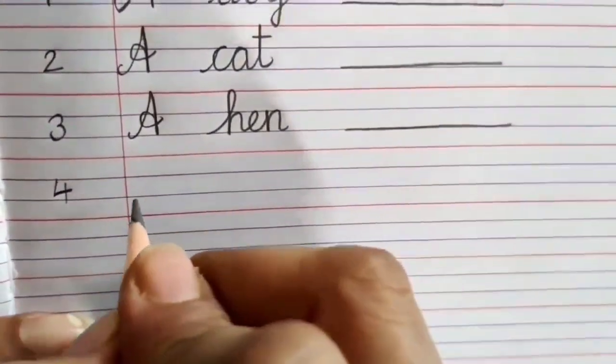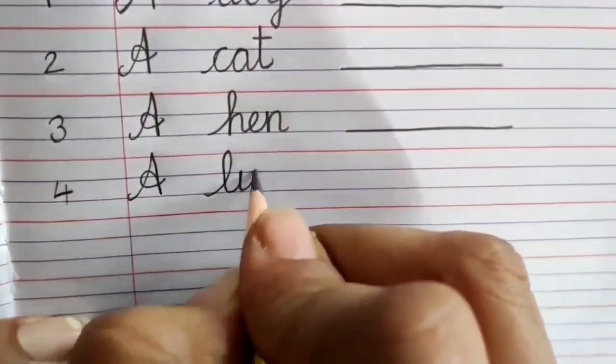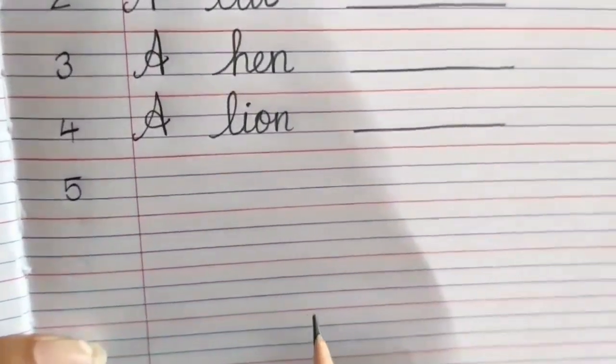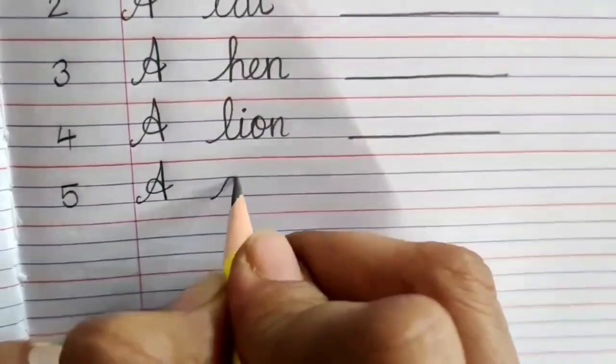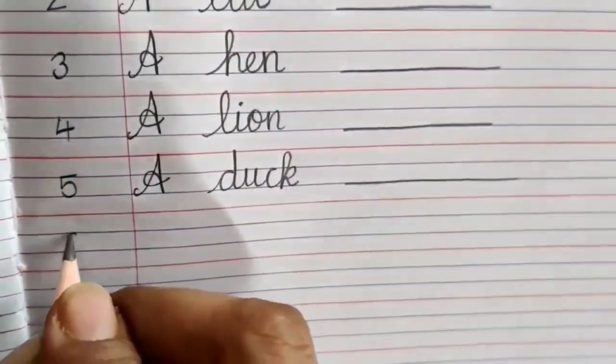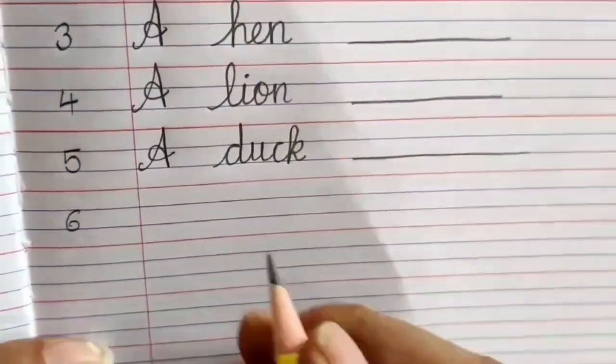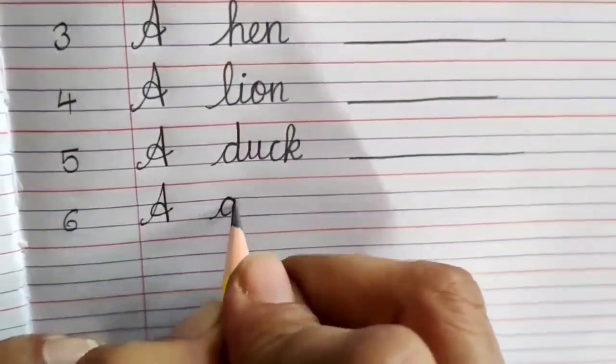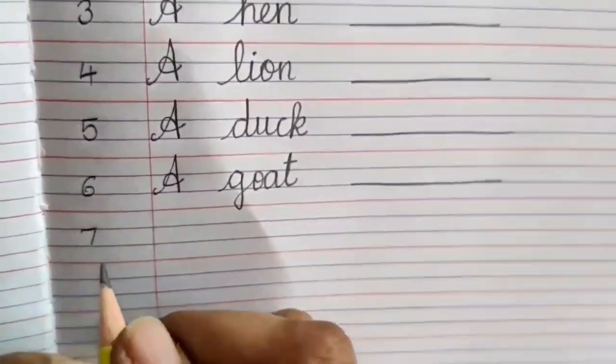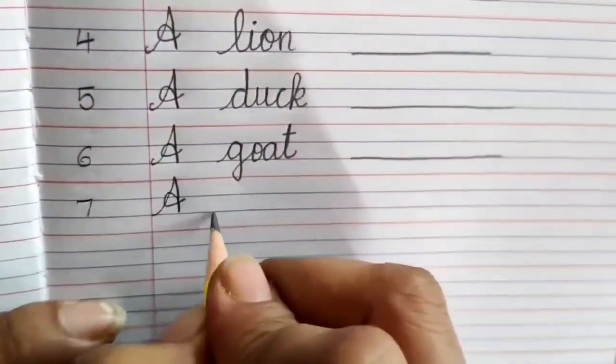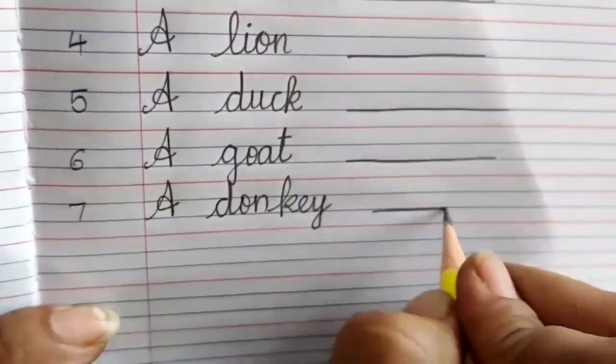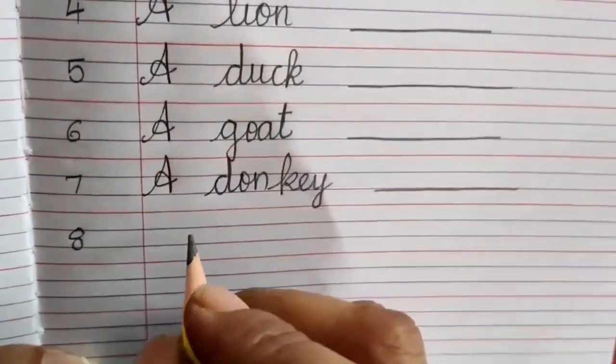Number 4 A L I O N lion dash. Number 5 A D U C K duck dash. Number 6 A G O A T goat dash. Number 7 A D O N K E Y donkey dash.